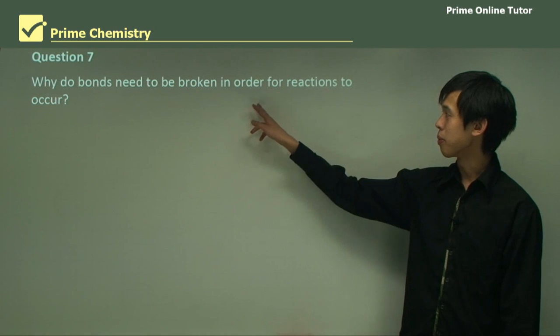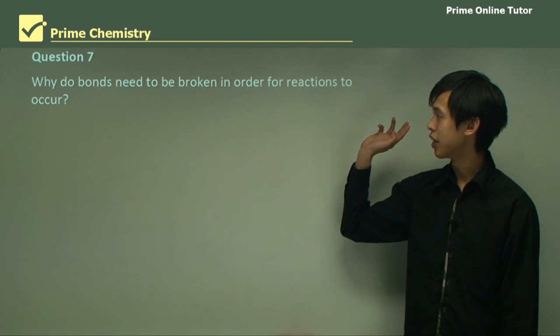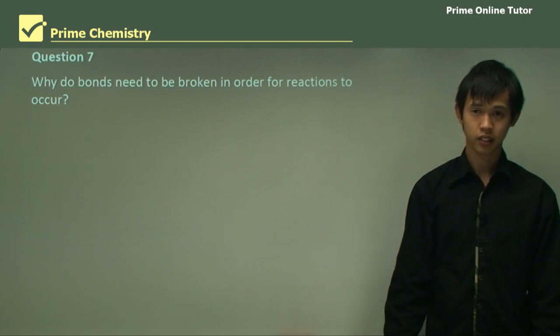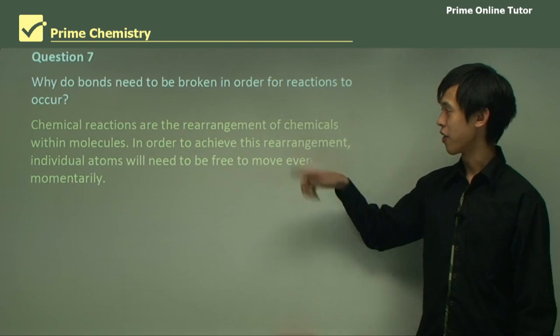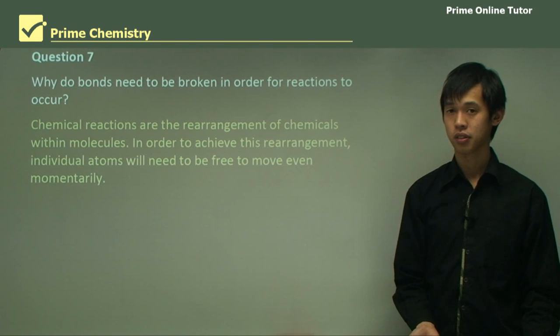So why do bonds need to be broken in order for chemical reactions to occur? Well, we just answered this question earlier. But chemical reactions are the rearrangement of chemicals within the molecules. So when we have a chemical reaction, we're just rearranging the atoms into new forms.